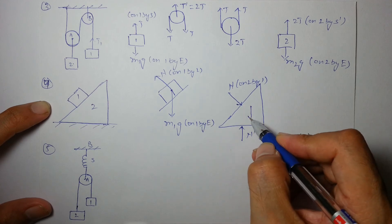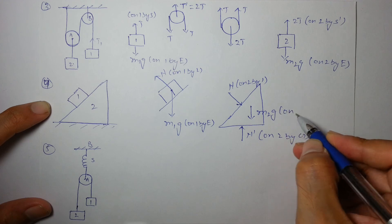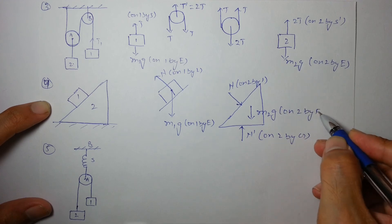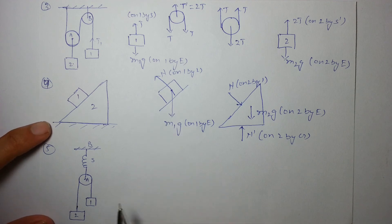This is weight on one by, and the weight of obviously block two m2g on two by earth. This is the FBD of two, this is the FBD of one.